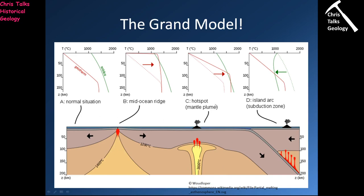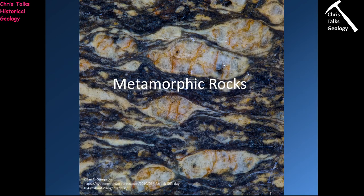That's the grand model: decompression melting, thermal melting, and hydration or flux melting. To form a mafic or ultramafic magma, you have to melt a mantle peridotite. To form a felsic or intermediate magma, you have to melt continental crust — always remember that. Okay, this is a great place to stop. Get up, have a walk around, go and get a drink of water, and then come back in a few minutes once you've given your mind a little bit of time to decompress.